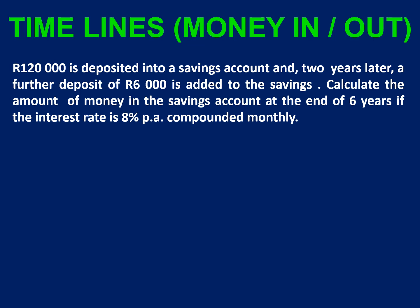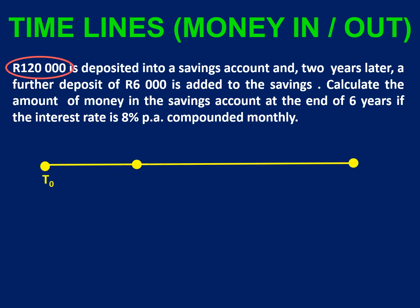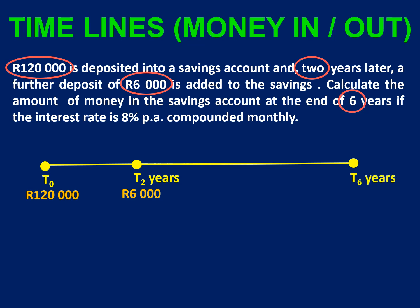The interest is being compounded and R120,000 is going in at the beginning. Two years later, another R6,000 is added to the account and we want to know how much is in the account at the end of six years. The interest is 8% per annum and we are going to compound it monthly. So the 8% we are going to write as a decimal — 0.08 — and because it is compounded monthly, we are going to compound it 12 times.